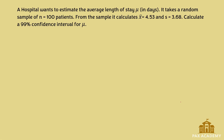A hospital wants to estimate the average length of stay in days, mu. It takes a random sample of 100 patients. From the sample, it calculates that the sample mean is 4.53 and the sample standard deviation is 3.68. Calculate a 99% confidence interval for mu. So n is 100, the sample mean is 4.53, and the sample standard deviation S, or sigma x-bar, is 3.68.